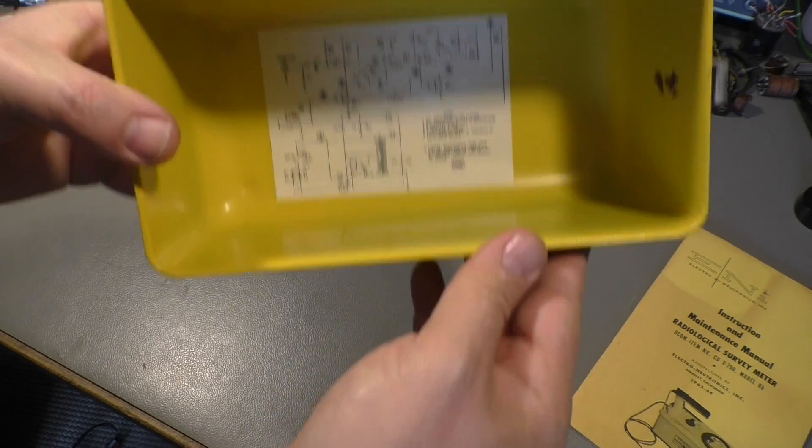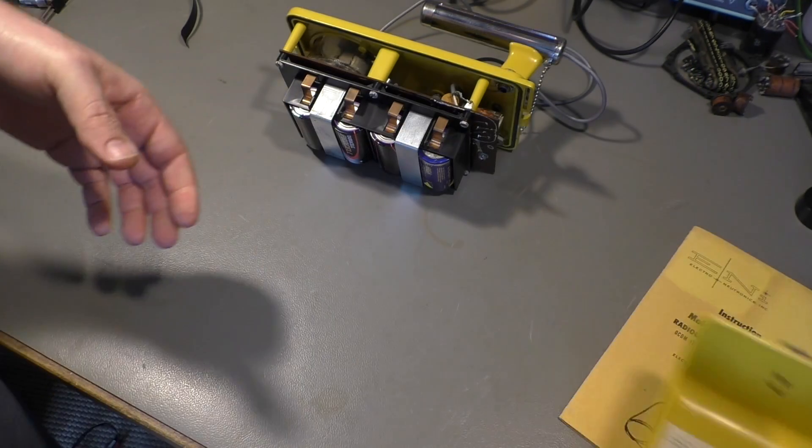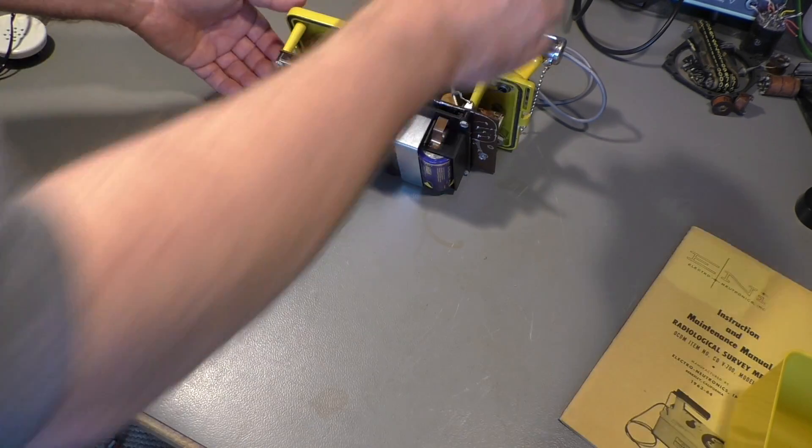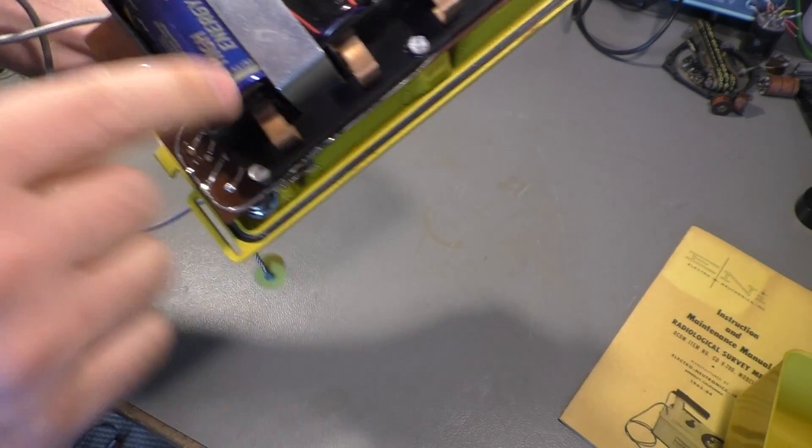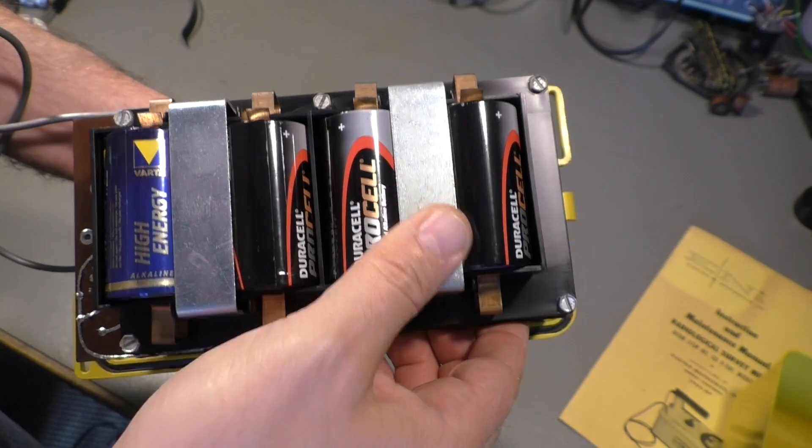There is, again, the schematic diagram in case you lose your manual. We have four D-cells, still the same size as today.